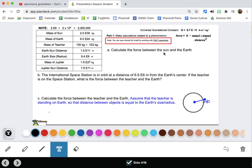I'm going to skip this one because it's so similar to the other one. I want to focus on some things that are a little bit weirder. This says the International Space Station is in orbit at a distance of 6.9 times 10 to the sixth meters from the earth's center. If the teacher is on the space station, what is the force between the teacher and the earth? We need to use this equation up here to make our calculations. Let's try doing that.